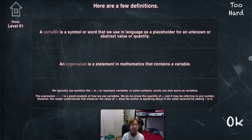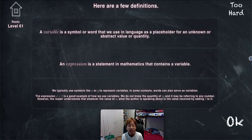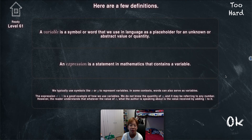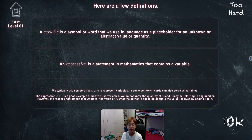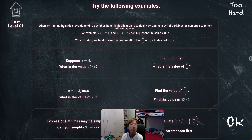The expression x plus one is a good example of how we use variables. We do not know the quantity of x — it may refer to any number. For example, 12 plus 1 equals 13, or it could be expressing 999,999,000. We don't know. However, the reader understands that whatever the value of x, the author is speaking about the value received by adding one to the unknown number. Try the following examples.